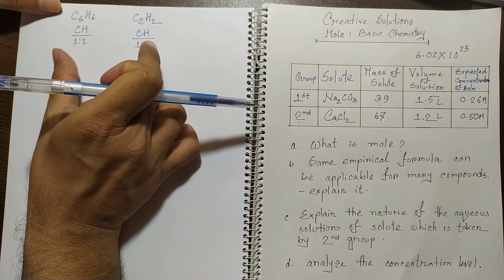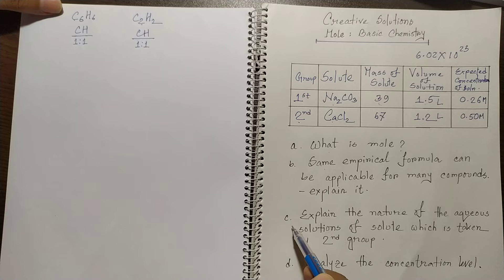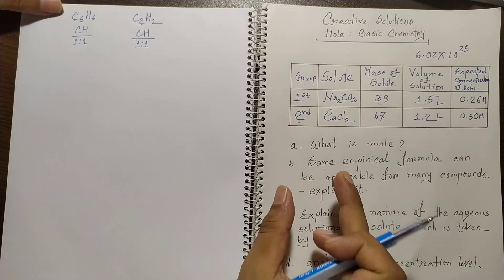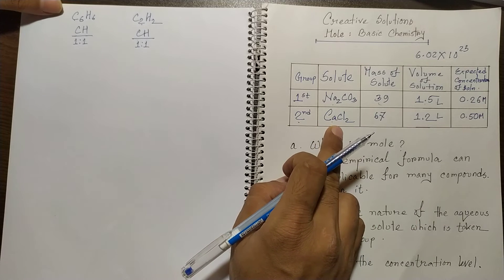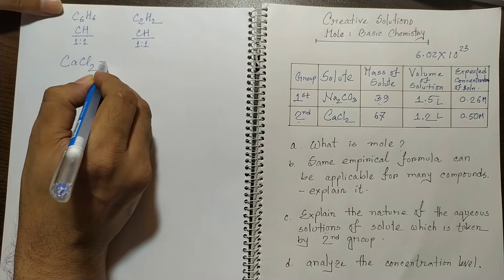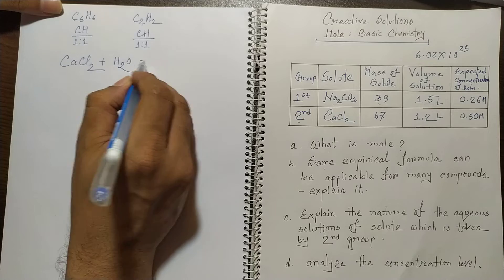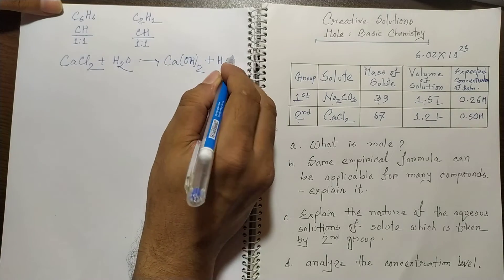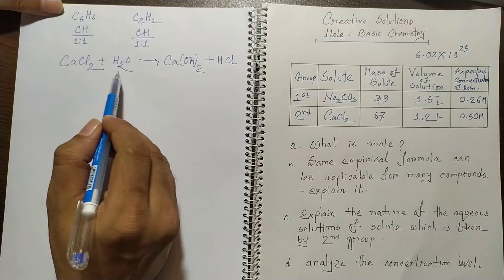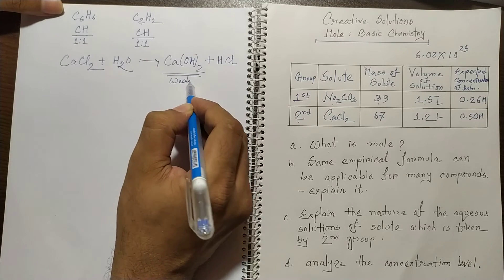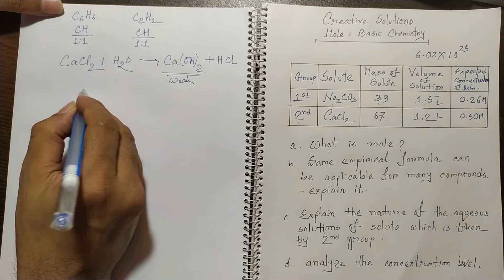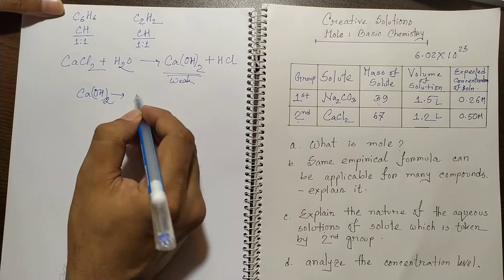The third question is to explain the nature of the aqueous solution of the solute taken by the second group. The second solute is calcium chloride. When calcium chloride is added to water, calcium hydroxide (lime water) and hydrochloric acid are produced. Calcium hydroxide is a weak base and does not ionize fully in aqueous solution.